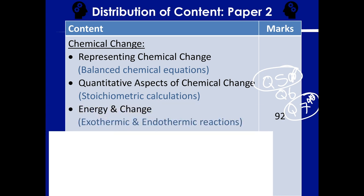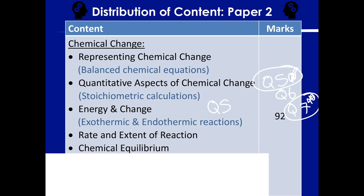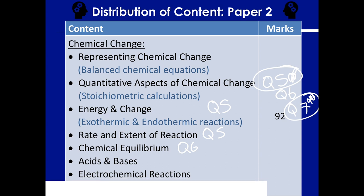You also have energy and change — your exothermic and endothermic reactions — which will be in Question 5 mostly. Reaction rates includes discussion of exo and endo reactions, and rate and extent of reaction is also Question 5, while chemical equilibrium is Question 6. Chemical change also includes acids and bases in Question 7, and electrochemical reactions in Questions 8 and 9.